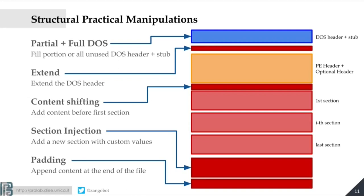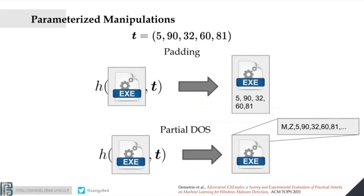So forget about X plus some noise — now we have these H functions. We have partial DOS as one implementation of H, extend as another H, and so on. Now we have a way to include content — but what do we include? We have this parameterization T. For the padding manipulation, T is a vector of byte values that the manipulation appends to the end. For the partial DOS, if T has five values, it overwrites the first five bytes in that blue area. The T parameter specifies which bytes I'm injecting inside the sample, and H tells me where and how.